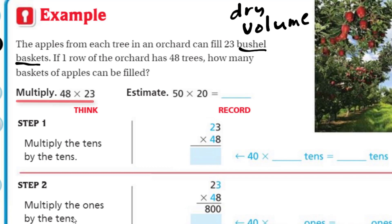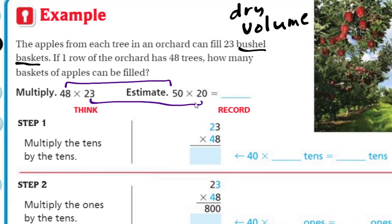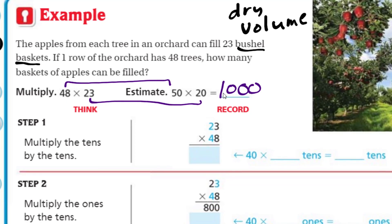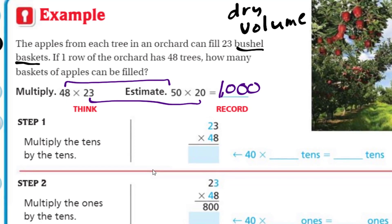We're going to multiply 48 times 23. The estimate — why don't you estimate 50 times 20? The 48 to 50 we went a little bit up, and the 23 we went a little bit down, so that should get us pretty close. We do our simple facts, we've got a couple powers of 10, so our answer should be around 1,000.